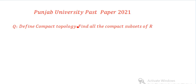It has a definition. What we have to do is find the compact subsets of R. What is R? R is a topological space, and since the topology is not mentioned here, the topology is the usual topology. So R is with the usual topology.